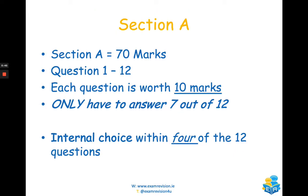Section A is your short answer questions, worth a total of 70 marks. These will comprise questions 1 to 12, and each question is worth 10 marks. You only have to answer 7 out of these 12 questions. Within those 12 questions, 4 of them will have internal choice, so it will say answer A or B within the one question.